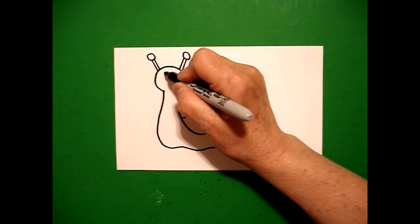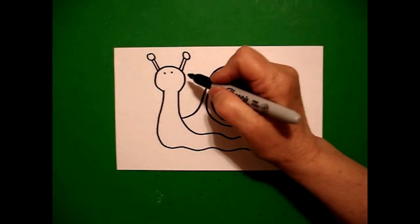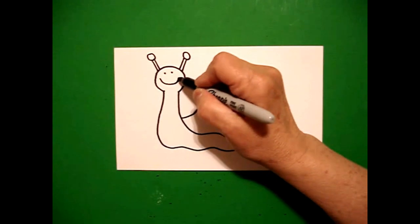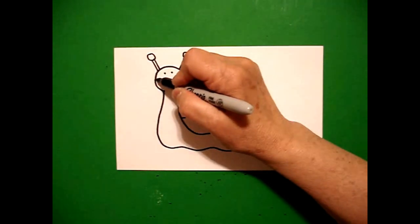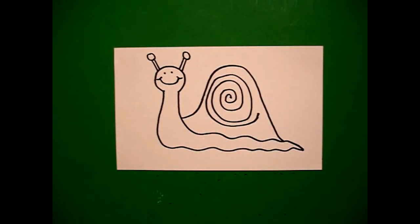Come inside, put one dot, two dots, curve line, little curve line, little curve line. Okay, let's see how we're going to color this in.